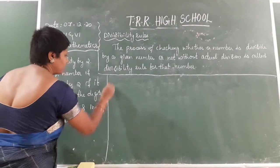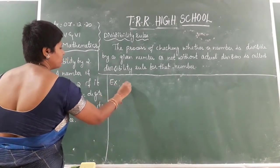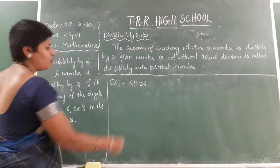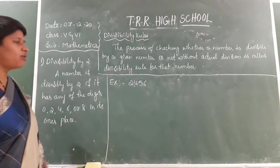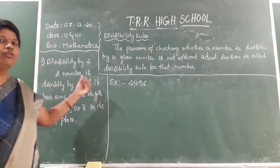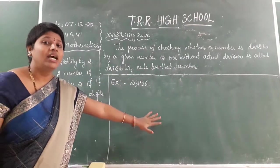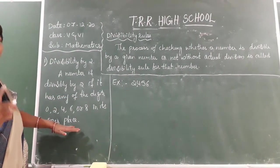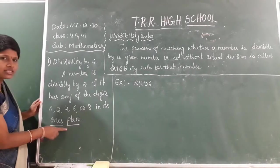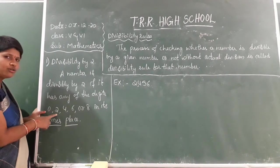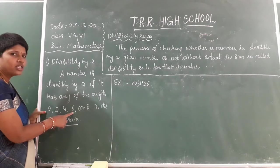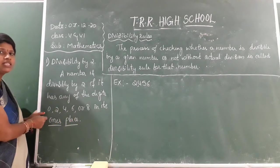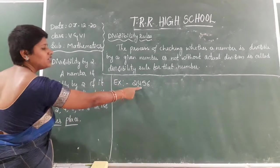I will explain with an example. Suppose I take the number 2,456. Now I want to check whether this number is divisible by 2 or not — without doing any division. According to the divisibility rule for 2, in the ones place either 0, 2, 4, 6, or 8 must be present. If any one of these digits is there, then definitely the number is divisible by 2.